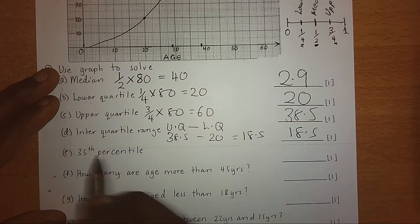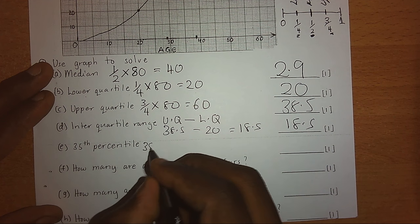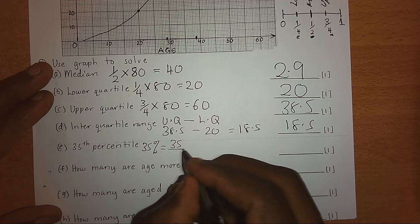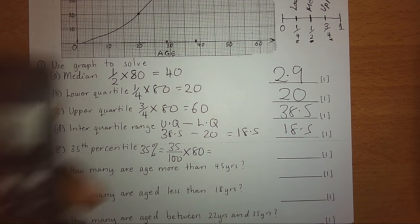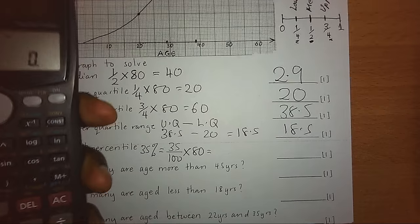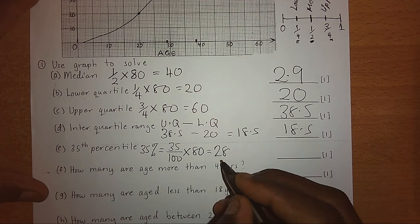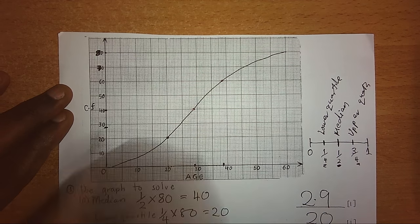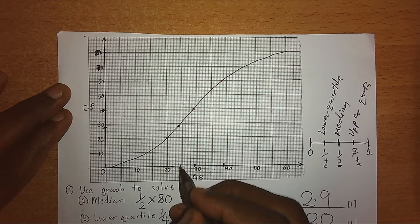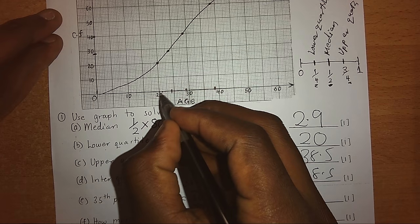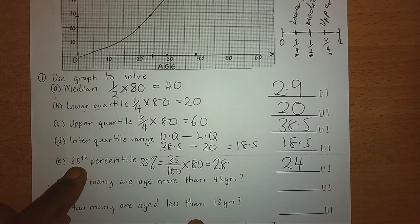When talking about percentile — percentile is percentage. For the 35th percentile, that means the 35th percentage, which is the same as 35 over 100 times the total cumulative frequency: 35 divided by 100 times 80 gives us 28. We go to 28 on the vertical axis, move horizontally to the curve, then drop down. Counting carefully, we get 24. So the 35th percentile gives us 24.